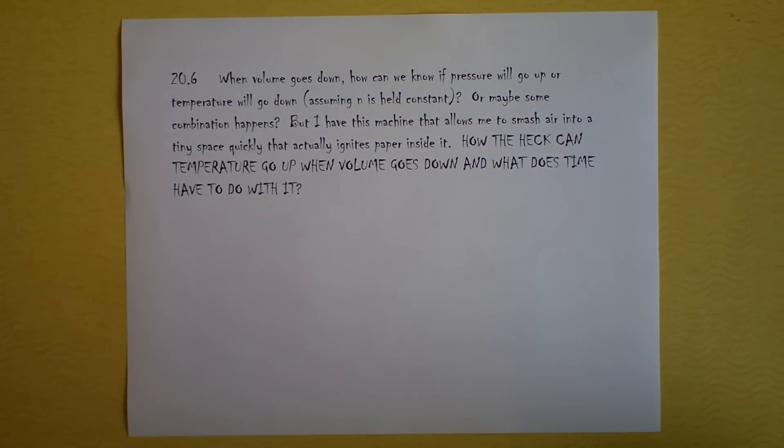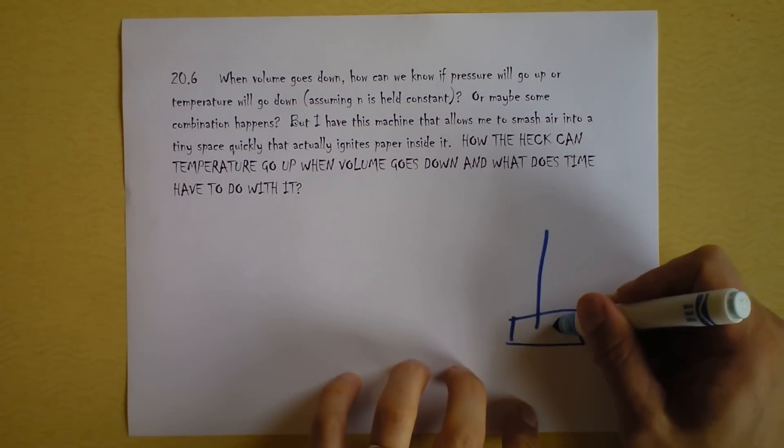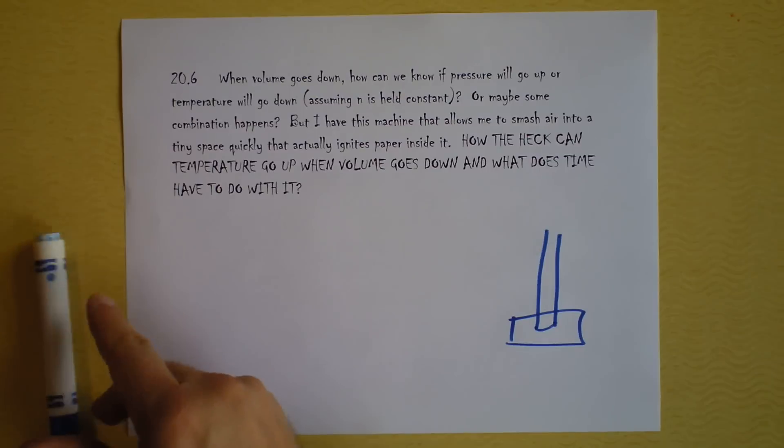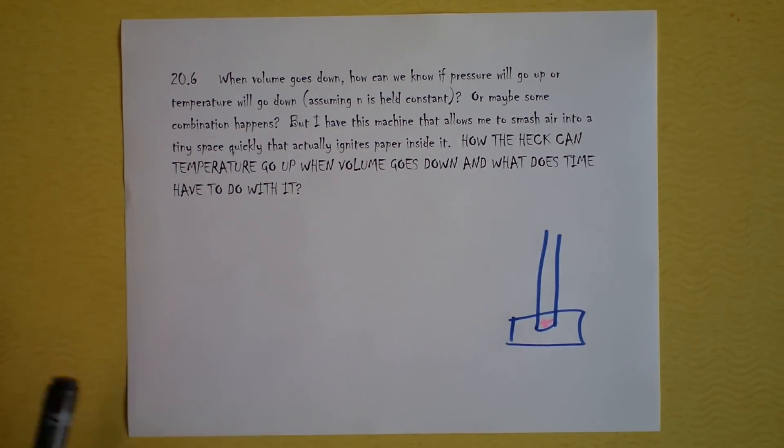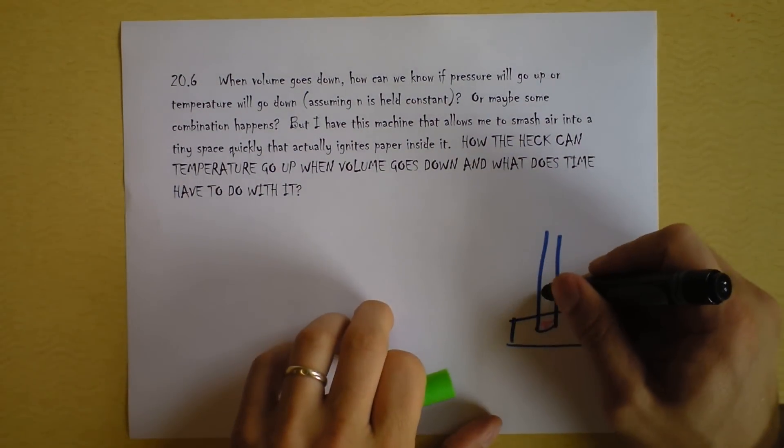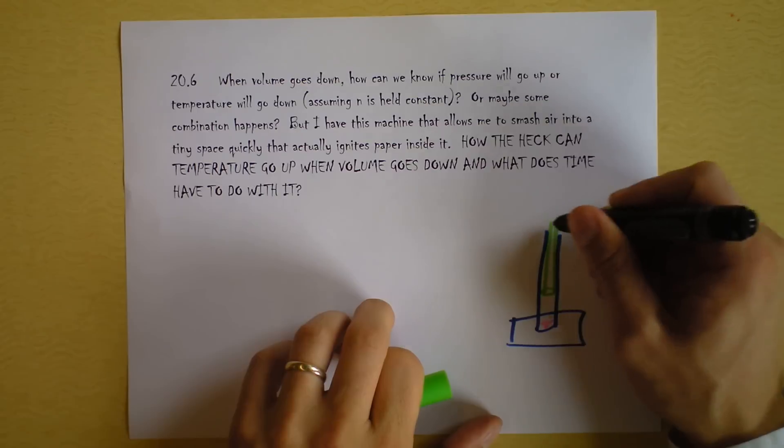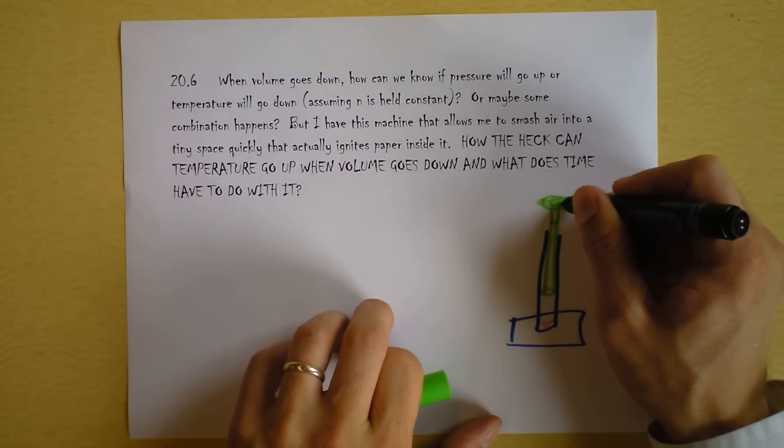When volume goes down how can we know if pressure will go up or temperature will go down? This is like the last problem kind of. The question is what is held constant? And in this case I'm saying that n was held constant. So maybe there's some combination in which pressure goes up a little and temperature goes down a little. Of course we're referring to this PV = nRT thing or PV = nkT if you like big numbers. But there's this machine and if I smash it BAM. Let me show you a little picture of this machine. It has a base and it is a tube and it's clear which is really cool. So down at the bottom of the tube I put a tiny bit of cotton lint, just some fuzz down there. Maybe it's a pink t-shirt that I tore up.